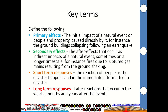Just a couple of key terms that AQA expects you to know. The primary effects of an earthquake are the initial impacts of a natural event on people and property caused directly by it — for instance, buildings collapsing following an earthquake. Secondary effects are the after-effects that occur as indirect impacts of a natural event, sometimes on a longer time scale, such as fires due to ruptured gas mains resulting from ground shaking, or air pollution from a forest fire.